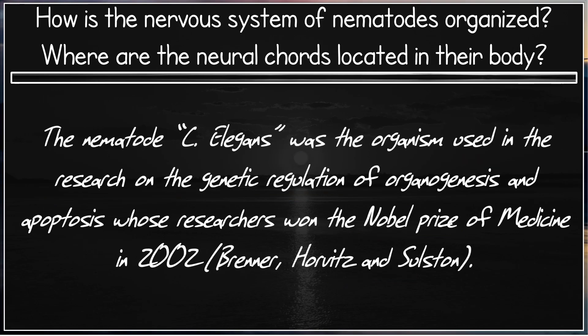C. elegans was the organism used in research on genetic regulation, organogenesis, and apoptosis, for which researchers won the Nobel Prize in Medicine in 2002: Brenner, Horvitz, and Sulston.